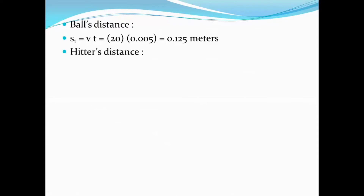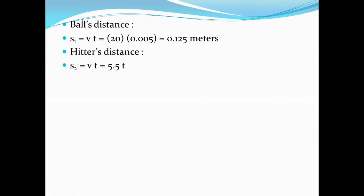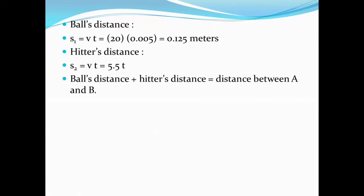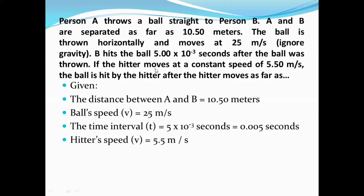Hitter's distance — what is the hitter's distance? It is given: 10.5 meters. So we know S2. Ball's distance plus hitter's distance is equal to the distance between A and B. The hitter moves at a constant speed of 5.5 meters per second for hitting the ball after it is released by A. So B has come ahead with a speed of 5.5. Please remember this.